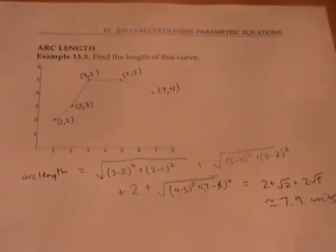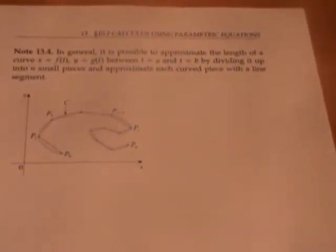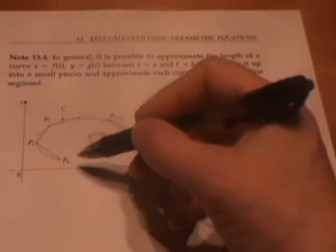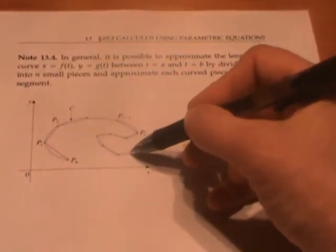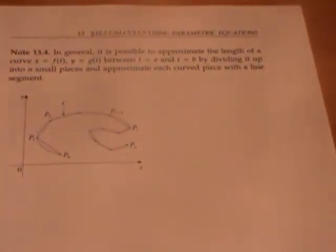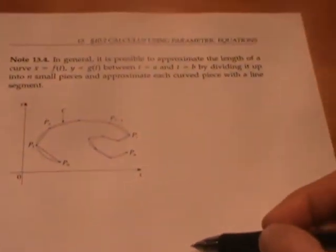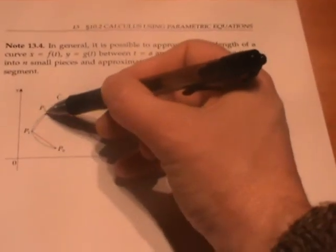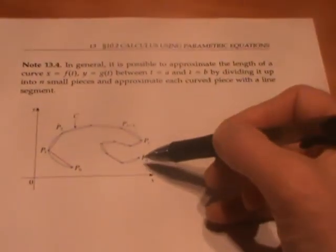It's possible to use this same idea to approximate the arc length of an arbitrary curve. Here I'd like to find the length of this blue curve, and I'm going to approximate it with straight line segments drawn in pink by dividing the curve into different points: p0, p1, p2, all the way through pn.